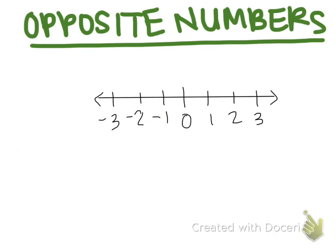Let's try to identify at least one set of opposite numbers on this number line. I'm going to start at zero and move to the left into the negative integers, two spaces.